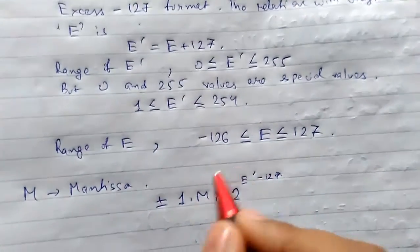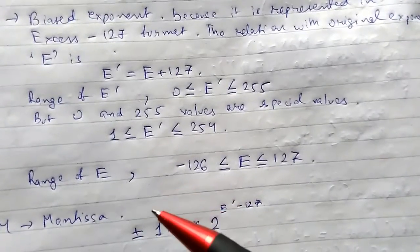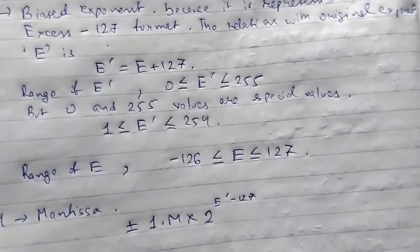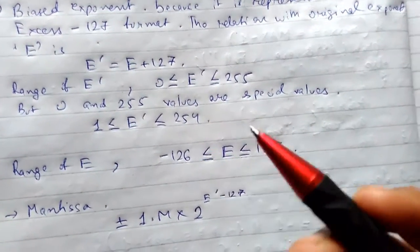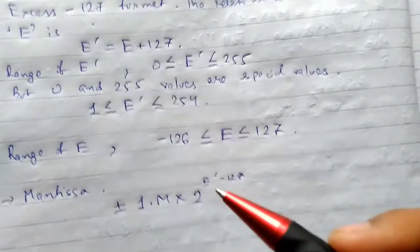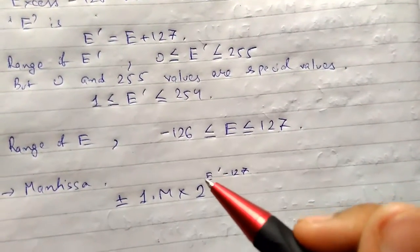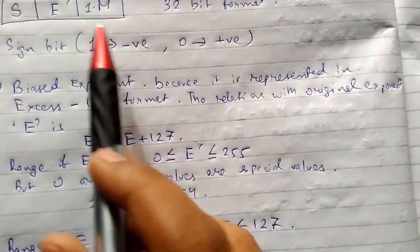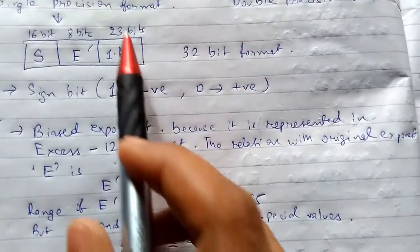This is how it will be represented in single precision format. Since binary normalization is used, the MSB of the mantissa is always set to 1. It is assumed to be the immediate left of the binary point. Thus it is called hidden one. This 1 is hidden.